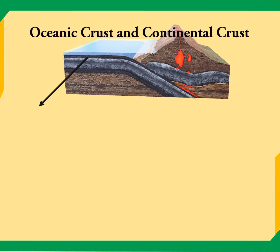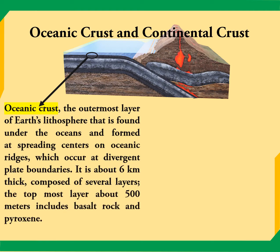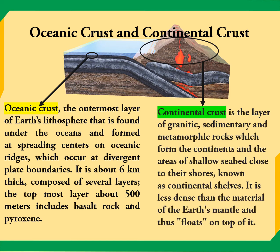The crust is divided into two types: oceanic and continental crust. Oceanic crust is the outermost layer of Earth's lithosphere found under the ocean. Even though it is under the ocean, it is still part of the crust. It is about six kilometers thick and is composed of several layers, including basalt rock and pyroxene. Continental crust is the layer of granitic, sedimentary, and metamorphic rock. The key difference is that oceanic crust lies below the ocean, while continental crust forms the land we see above. Continental crust is much thicker compared to oceanic crust.